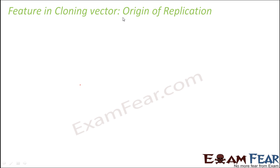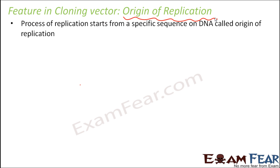What do we mean by origin of replication? Whenever we talk about the process of replication, there has to be a specific site on the DNA from where the process of replication will start. That specific point is known as the origin of replication — the specific sequence on DNA from where replication starts, often written as ORI in short form.